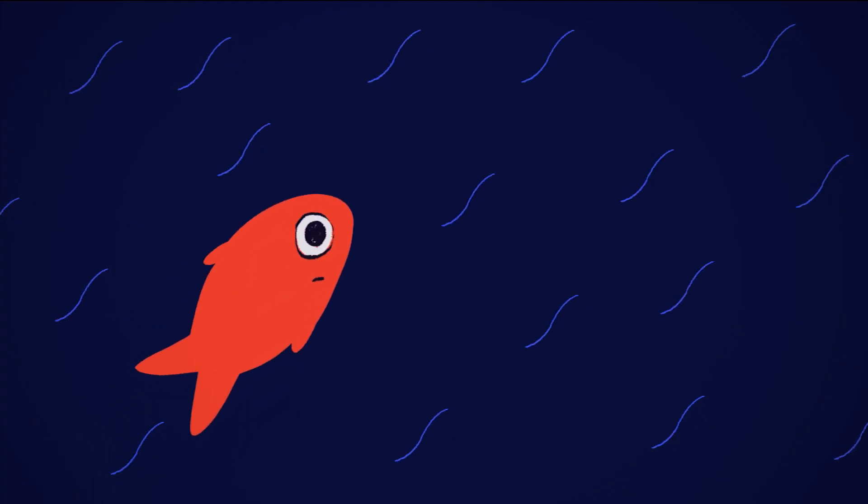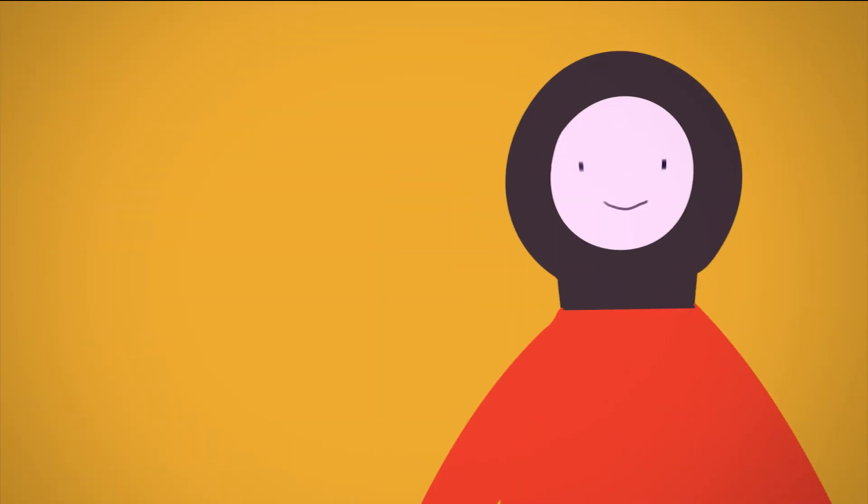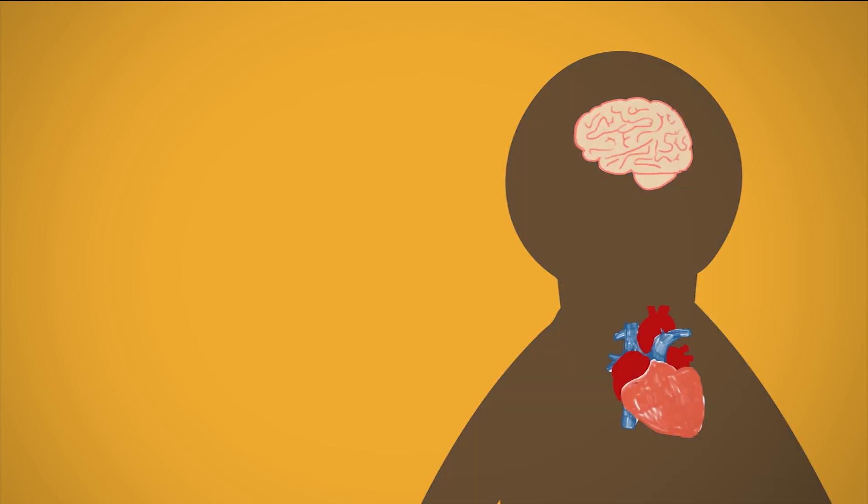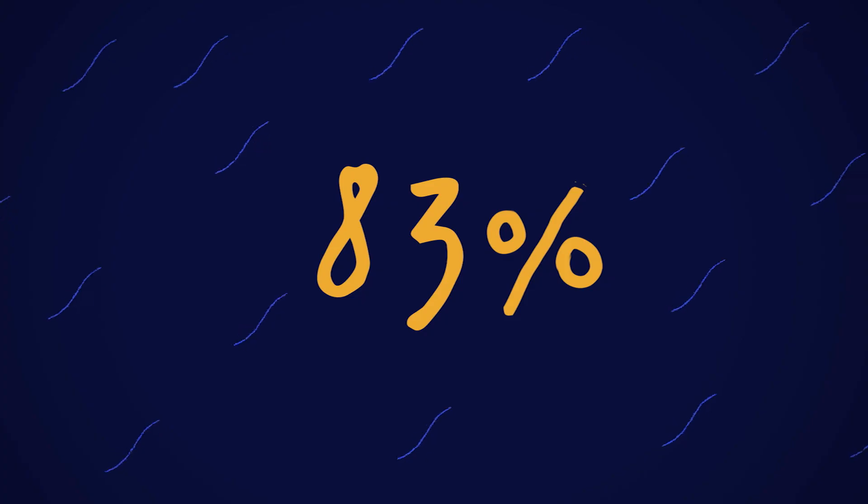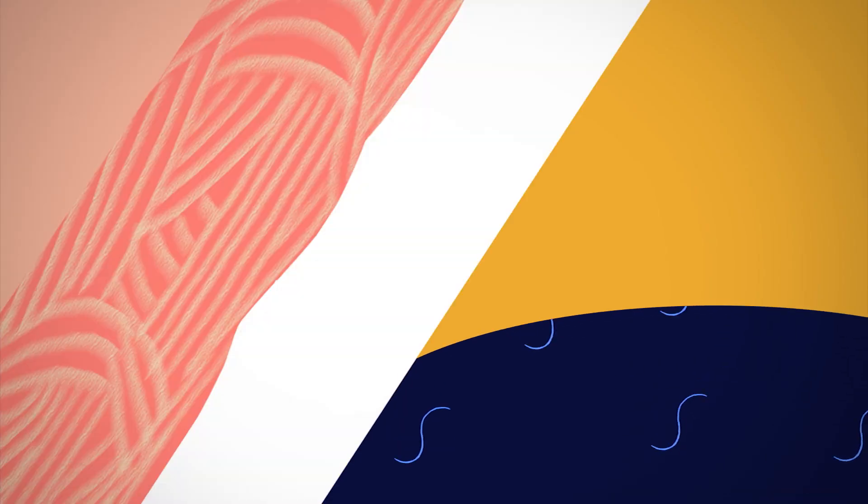We may not be fish swimming in water, but we are a watery species. Our brains and hearts are composed of about 73% water, our lungs are a whopping 83% water, and our skin, muscles and bones are even quite watery too.